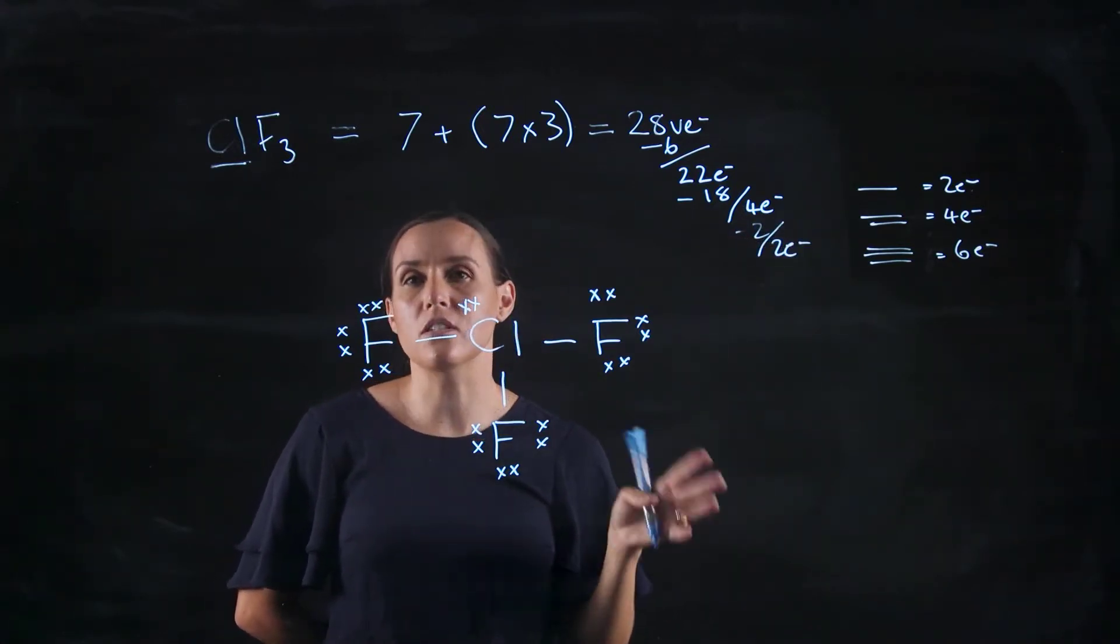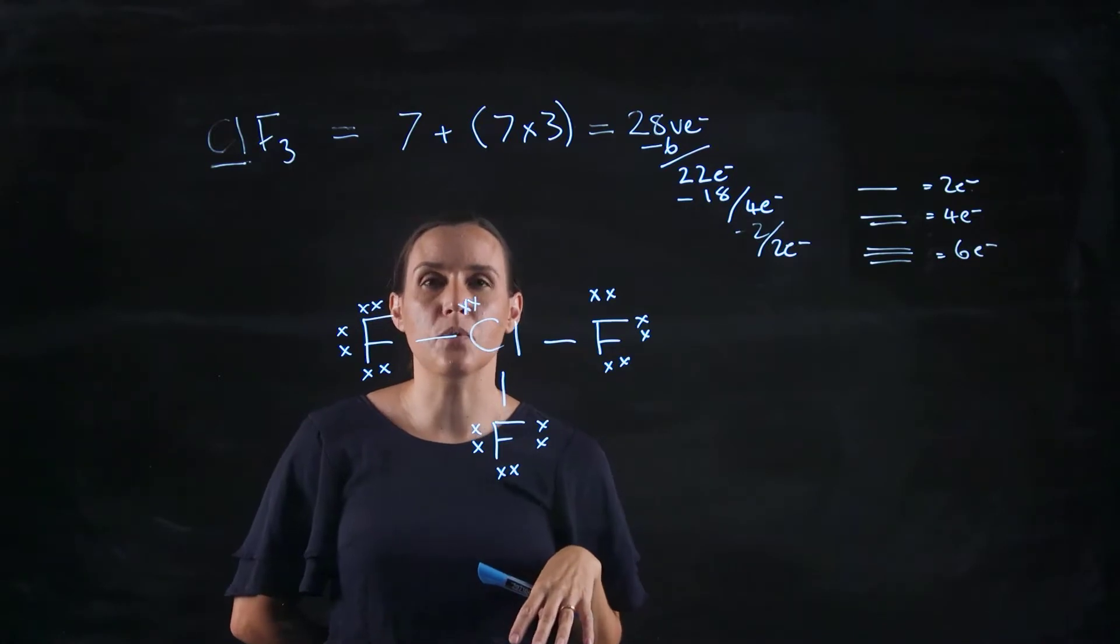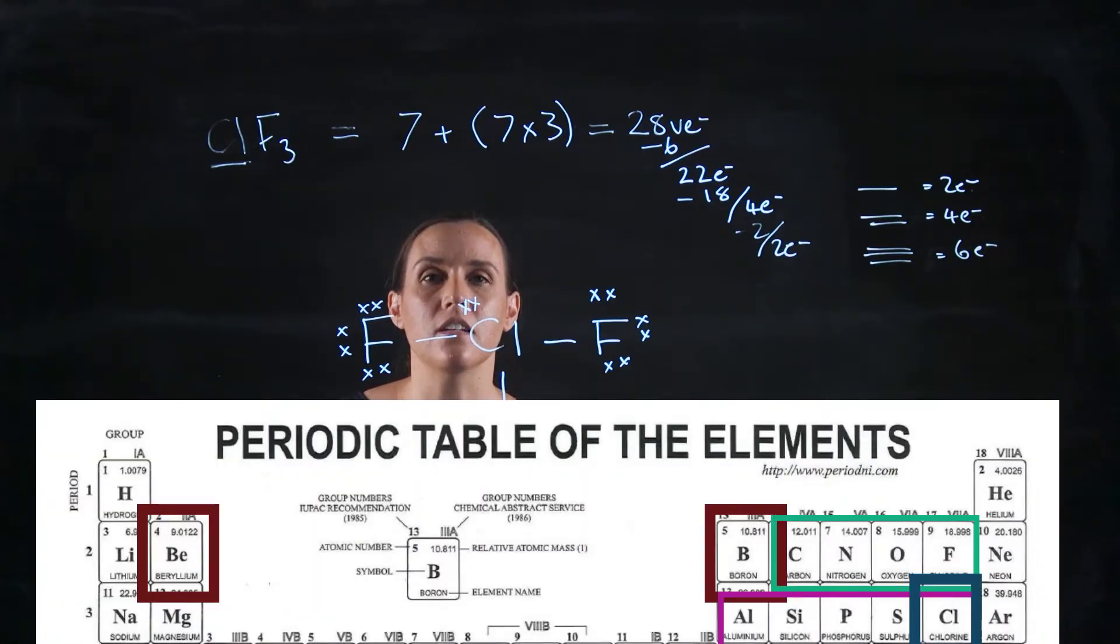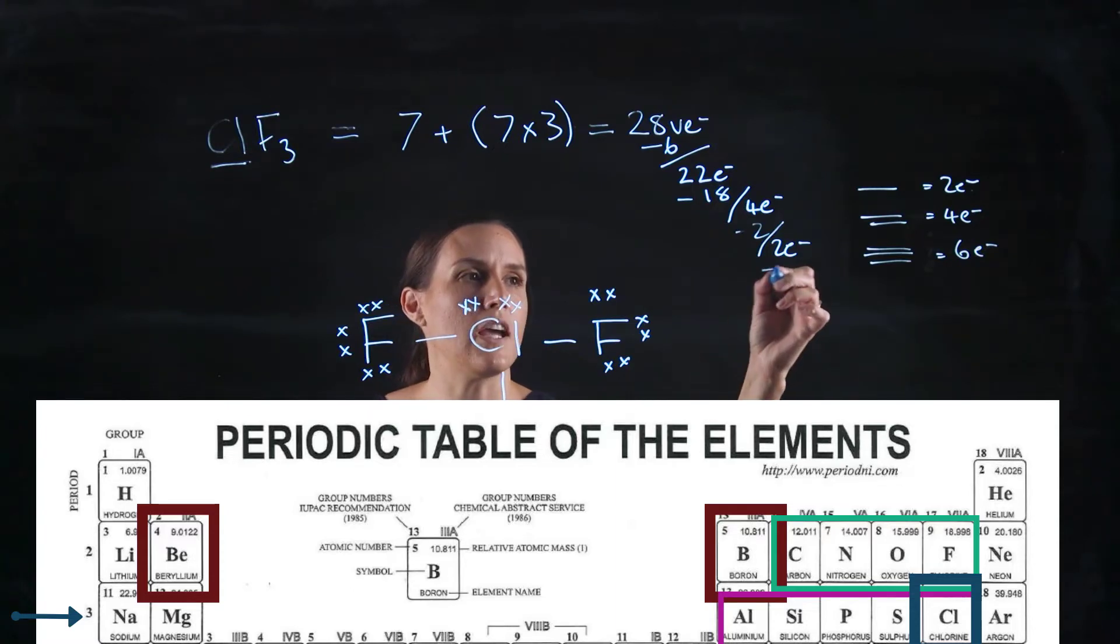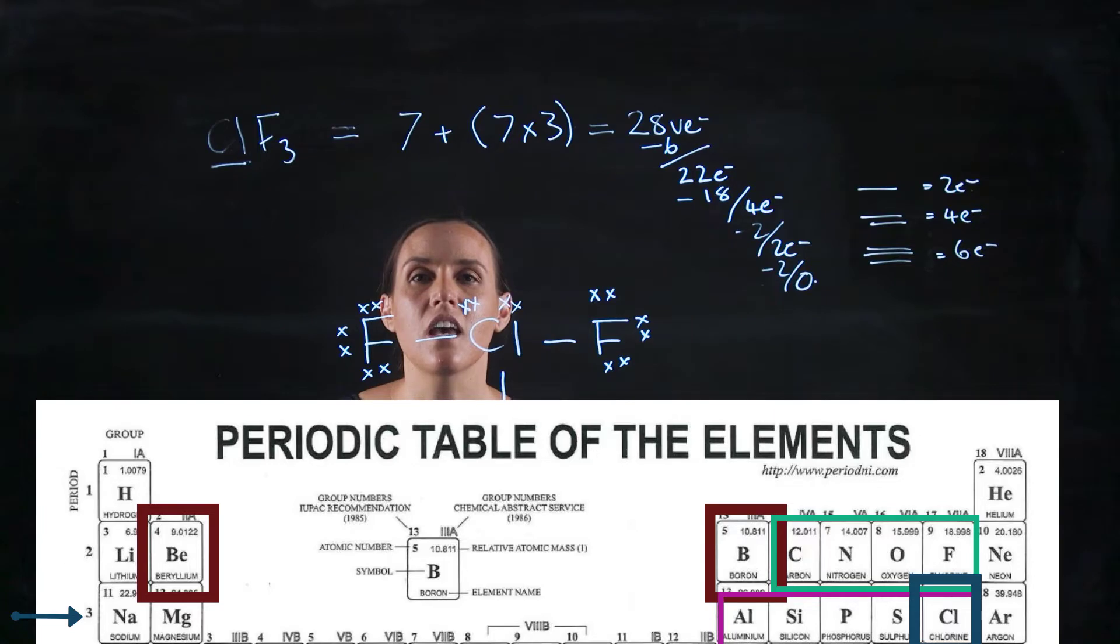So what you need to do is look where chlorine is on the periodic table, and that's below the third period, so the third energy level. So it can actually accommodate those extra electrons into the d orbitals. So those two extras would sit on chlorine, and it would exceed the eight valency, and it would hold ten. So this is what the structure would look like.